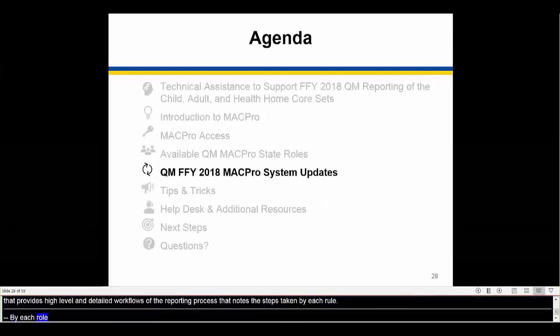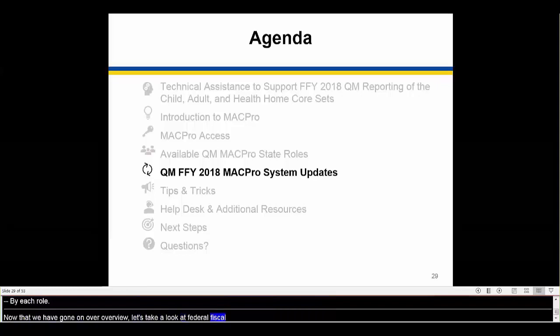Now that we've gone through an overview of MACPro, let's take a look at the Federal Fiscal Year 2018 MACPro System Updates for Quality Measure Reporting. Here, we'll talk about system-specific changes and updates for adult, child, and health homes quality measures.